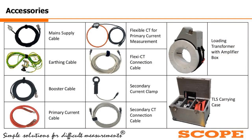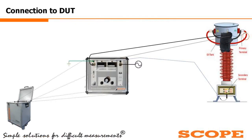These are the accessories supplied with the instrument: a mains supply cable, earthing cable, booster cable for current injection, and primary current copper cable — shown here in red. A flexible CT probe is provided for primary current measurement, a flexible CT connection cable, a secondary clamp-on CT for secondary current measurement, and the secondary CT connection cable — directly connected to the secondary clamp-on CT for CT secondary current measurement. This is the loading transformer, and this is the tool carrying case.